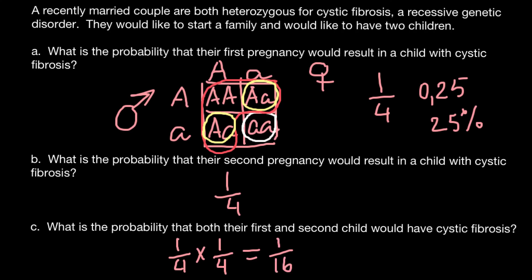If you need the answer as a percentage, you need to divide one by 16 and multiply by 100. And that gives you the answer in percentage form. Or if you need your answer as a decimal number, you just divide one by 16 to get the answer as a decimal number.